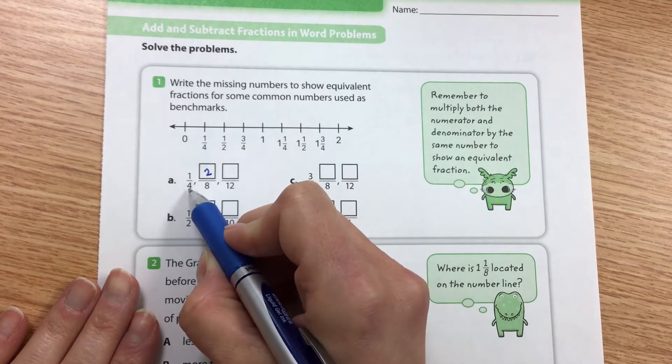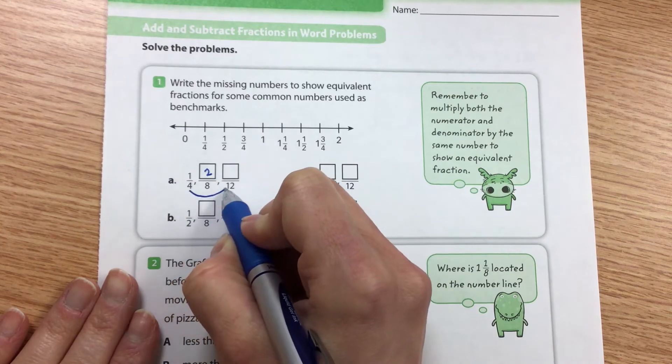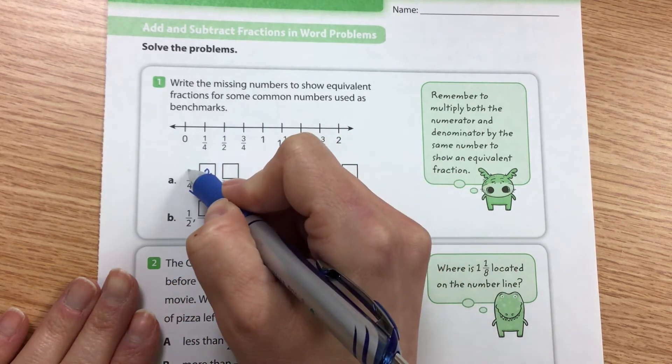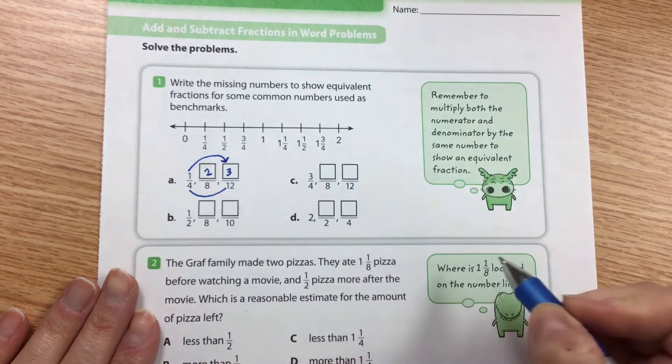So one fourth is equivalent to something over twelve. We multiplied our four by three to turn it into twelve, so we're doing the same thing to our one. We're multiplying it by three so it would be three twelfths.